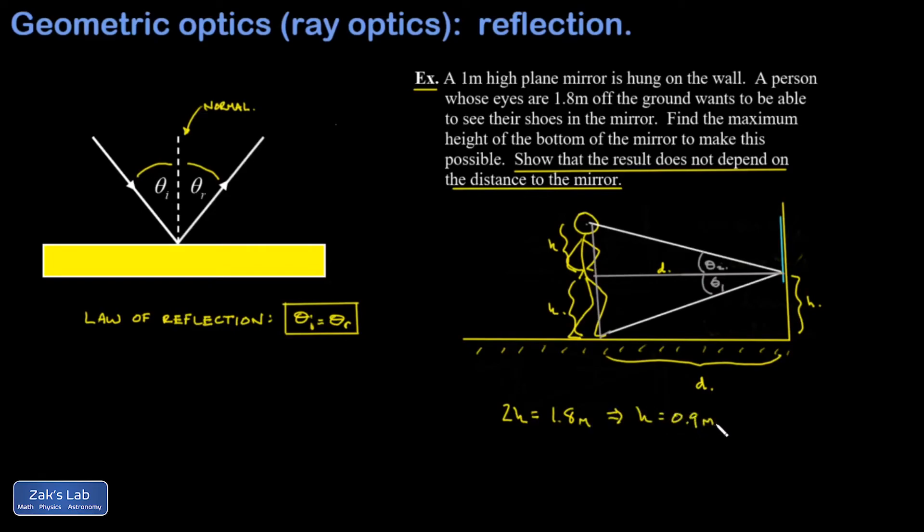So as far as answering the question to show that the result doesn't depend on the distance to the mirror, we've already done that implicitly by solving the problem without using a number for distance. But if you like, you can also visualize just backing away from the mirror, and maybe the person stands twice as far away. Well, that reflected ray that's going to get to their eye is still going to land on the mirror at exactly half the height of the person, and again we'll end up with a maximum height off the ground for the mirror equal to half the height of the person's eyes off the ground, or 0.9 meters.